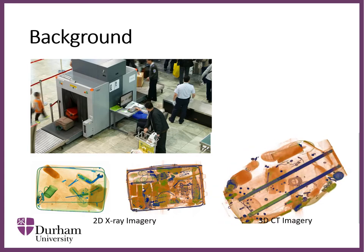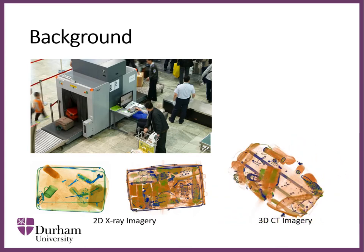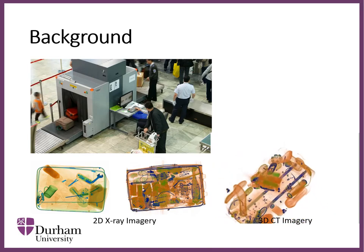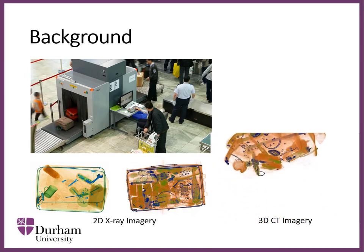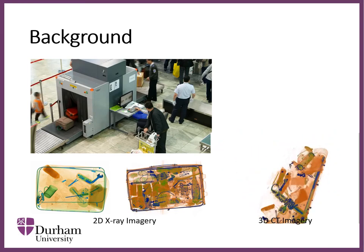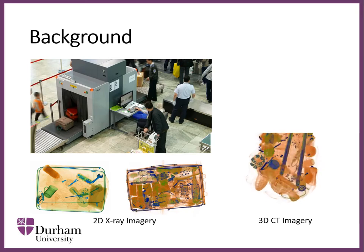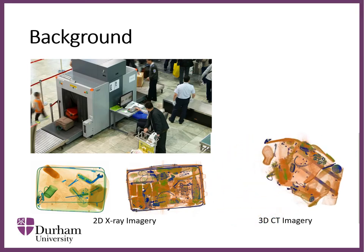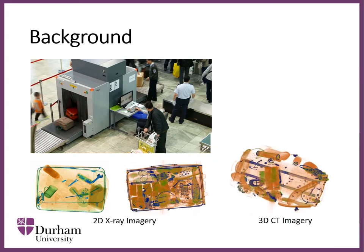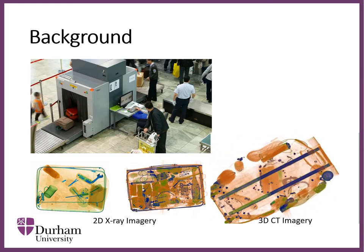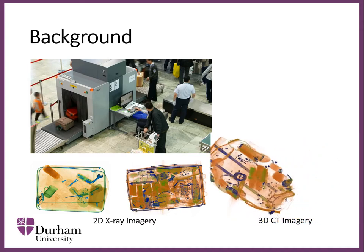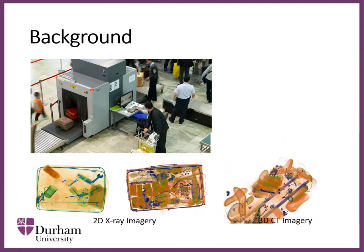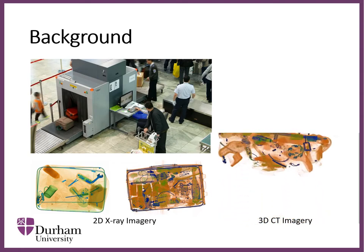A few words about the background. This work arises from a real-world application in airports. When you go to an airport before boarding, your bags and suitcases need to pass through an X-ray machine as shown in the image. The X-ray machine scans your baggage and generates an image like those shown at the bottom. Then human operators use their expertise to find any potential prohibited items in the image.